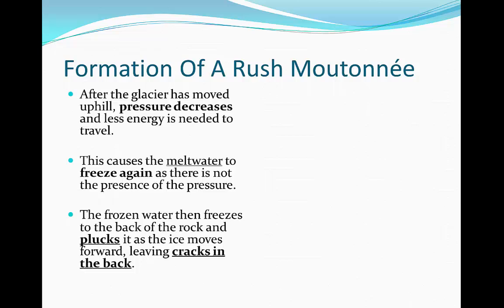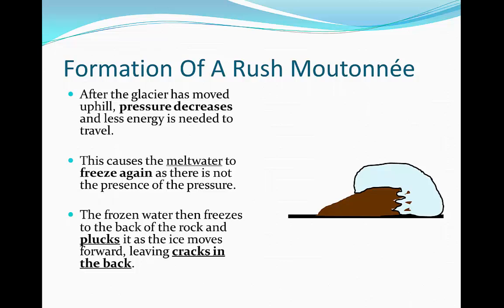The frozen water — which was water but is now turning back into ice — has frozen itself to the back of the rock, and it therefore plucks the rock as the glacier moves forward, leaving cracks in the back. The front has been smoothed by the meltwater and the glacier moving over it, while the refrozen meltwater is now ripping and plucking at the back of the rock.